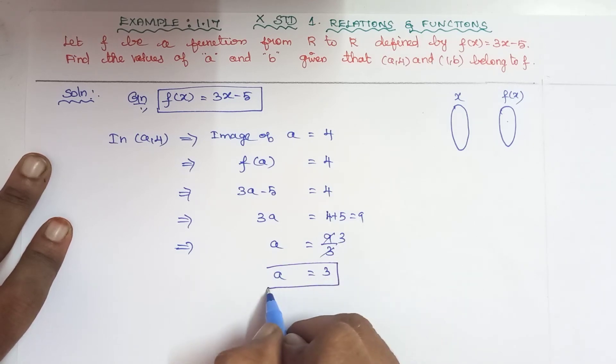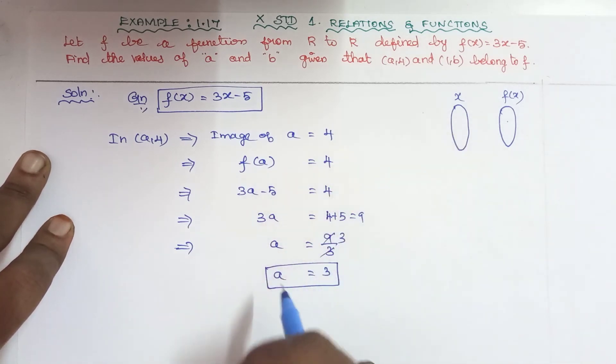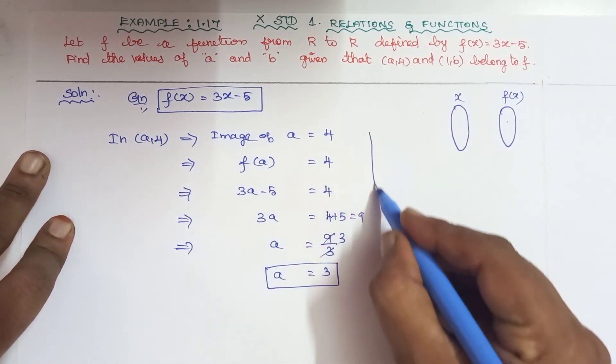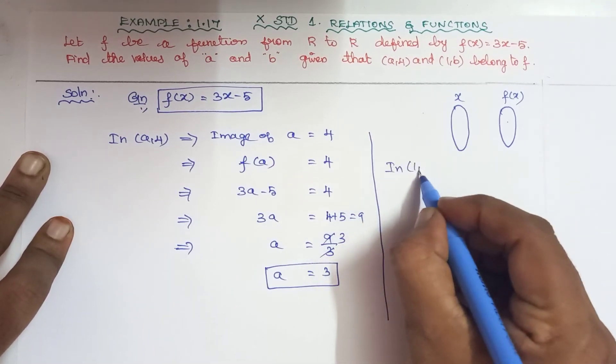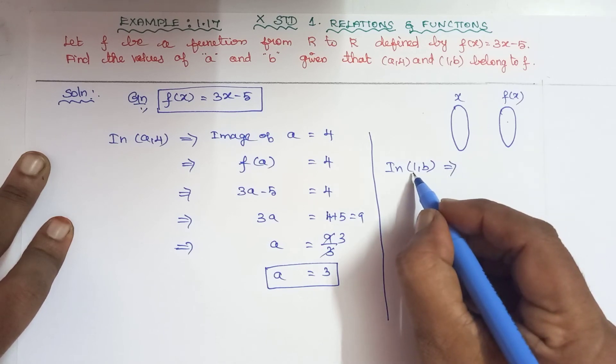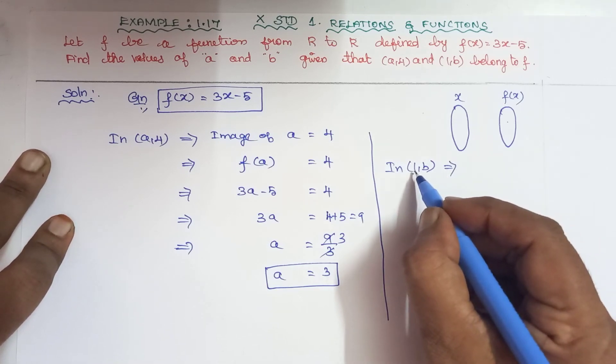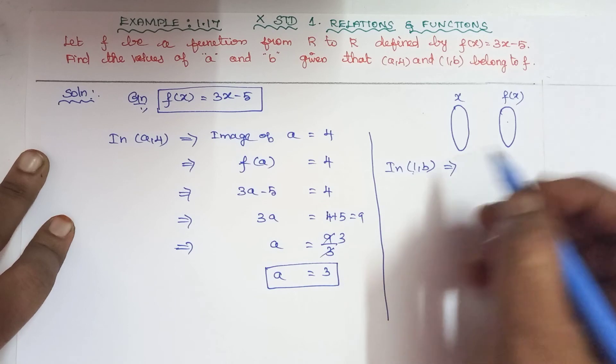Therefore, a = 3. Here is the second ordered pair: in (1, b), 1 is the domain and b is the range, the image of 1.